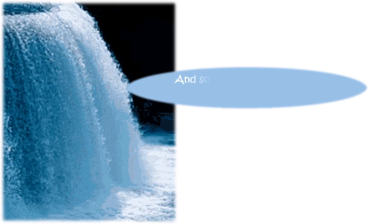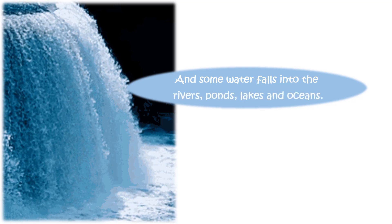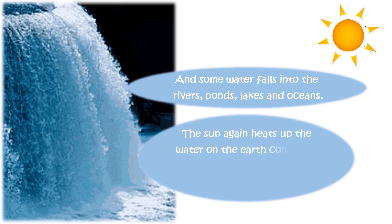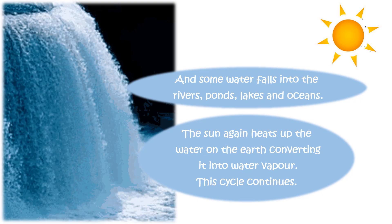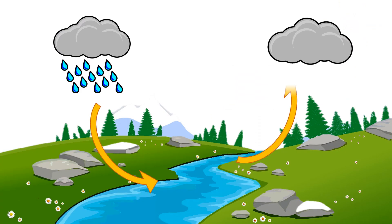And some water falls into the rivers, ponds, lakes, and oceans. The sun again heats up the water on the earth, converting it into water vapor. This cycle continues. We call this cycle the water cycle.